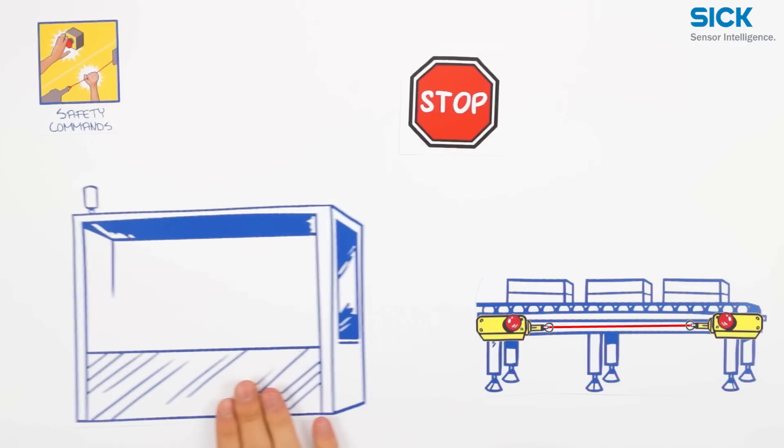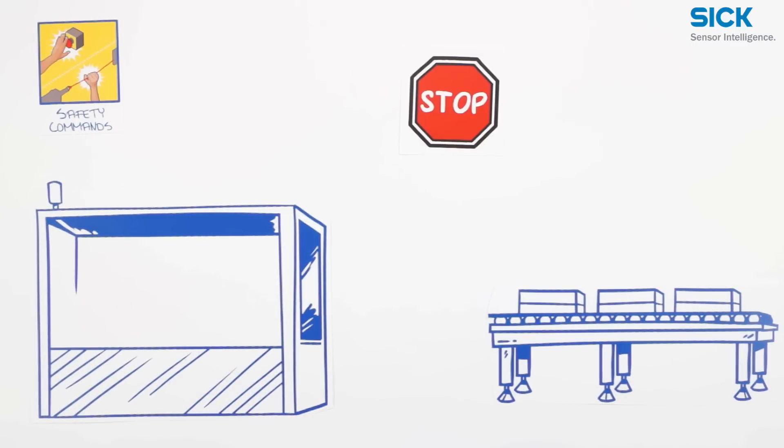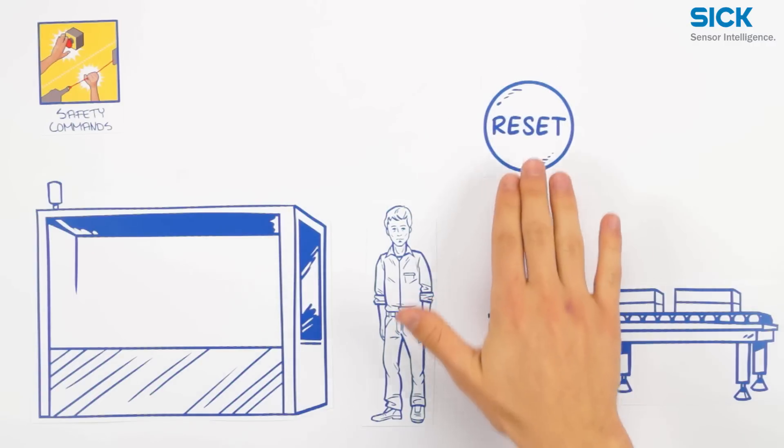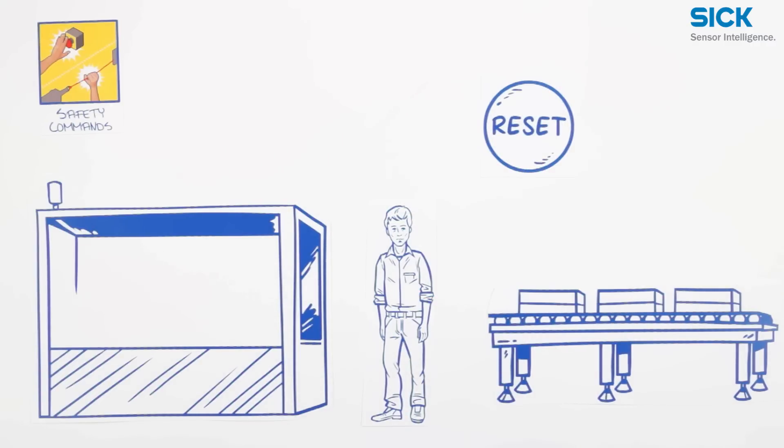In some cases, after initiating a stop function, people might still remain in the hazardous area without being detected by the protective device. In this case, the protective device must be reset using the reset push button before restarting the machine. For setup mode, you could use an enabling safety switch.